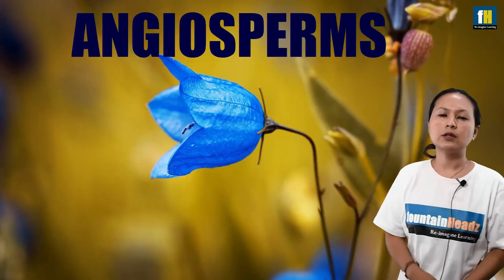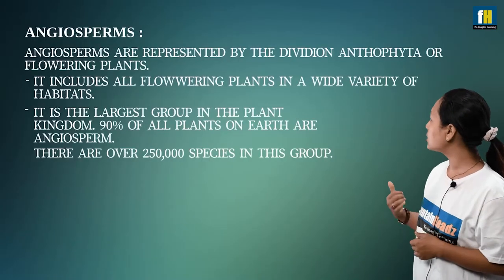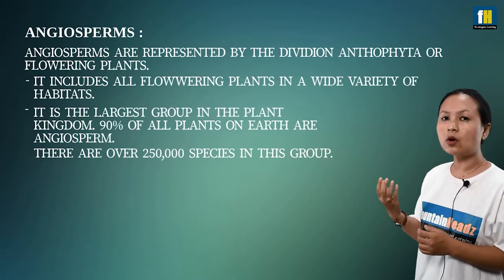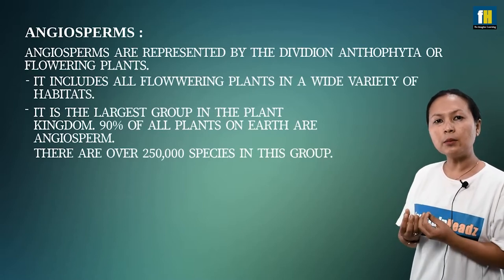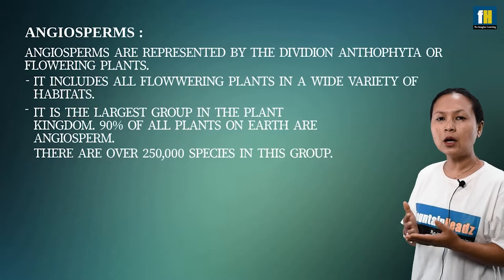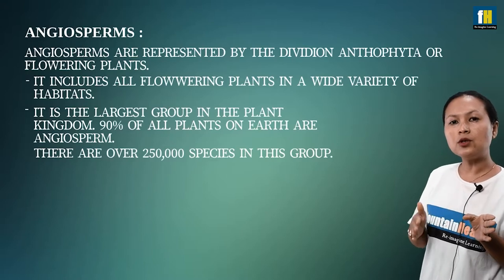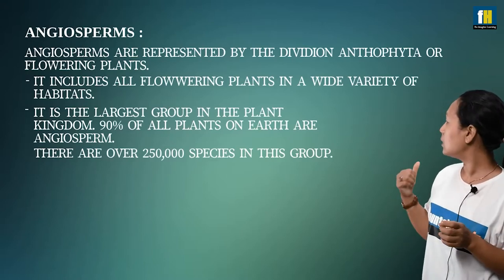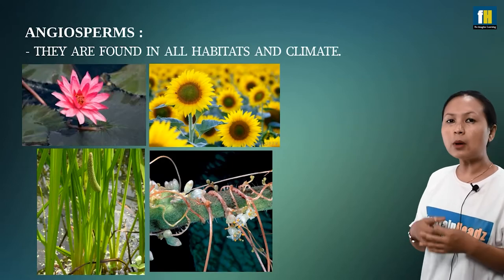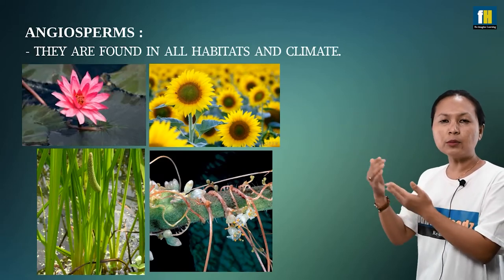Next is Angiosperm, the last plant kingdom division. Angiosperms are also known as flowering plants because they include all flowering plants, comprising about 90% of all plants. Angiosperms can be found in different types of habitats, including even parasitic plants.